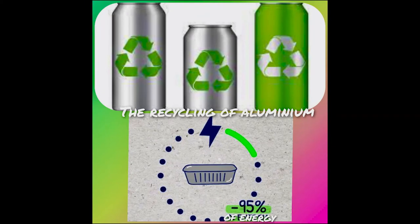Recycling aluminium is therefore extremely important, especially on an ecological level. First of all, aluminium can be recycled indefinitely without losing its qualities. Furthermore, only 5% of the energy used for primary production is needed for recycling. This energy saving saves an average of 8 tons of CO2 per recycling cycle. By limiting the production of aluminium from bauxite, environmental disasters can also be avoided, such as the current risk of extinction of chimpanzees in Guinea, or others that have already happened.